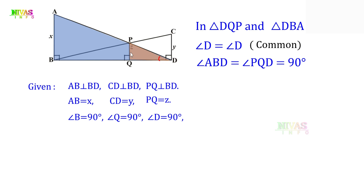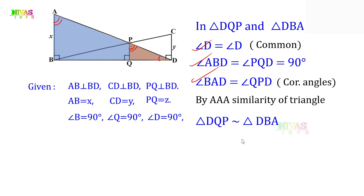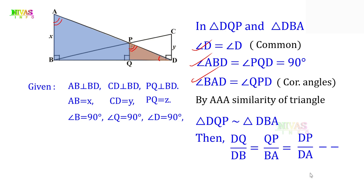Next, AB and PQ are parallel lines and BD is the transversal. We have corresponding angles: angle B and angle Q are both 90 degrees. So angle ABD equals angle PQD equals 90 degrees. Also corresponding angles give us angle BAD equals angle QPD. By AAA similarity of triangles, triangle DQP is similar to triangle DBA. This is proved. We apply the theorem: DQ by DB equals QP by BA equals DP by DA. This is equation 1.